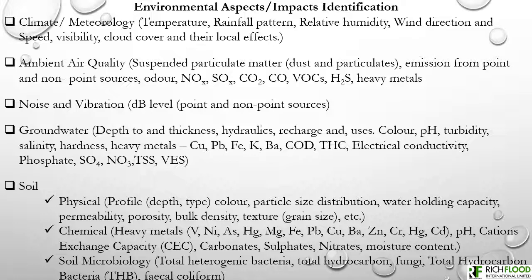The first environmental component to consider is climate and meteorology. The component details include microclimate and regional climatic features. The impact indicators — the parameters to be monitored to discover a change or deviation — include temperature, rainfall pattern, relative humidity, wind direction and speed, visibility, and cloud cover, as well as their local effects.